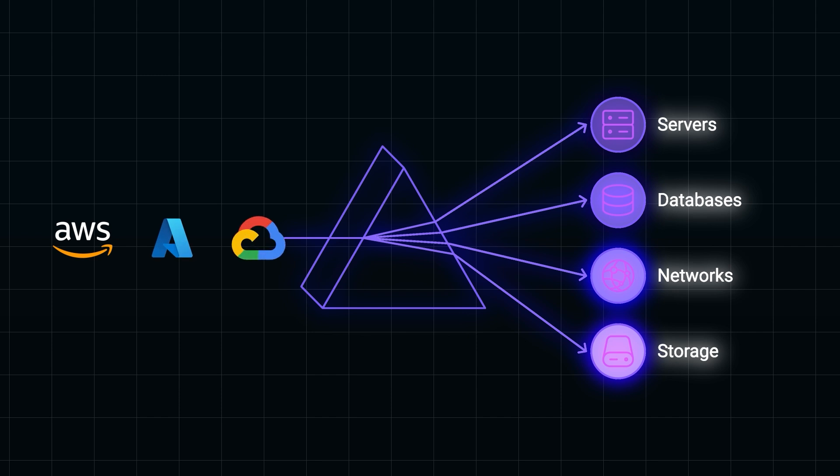The problem is that manual infrastructure management doesn't scale well. As environments like development, staging, and production grow, it gets harder to ensure consistency. Even a small misconfiguration can cause major issues, and replicating your infrastructure across different regions or cloud providers becomes a real challenge.